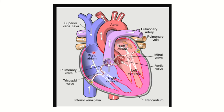Here we can see this is a heart diagram showing the mitral valve on the left side. In the case of the mitral valve, there are only two cusps — one anterior and one posterior. Blood enters from the left atrium to the left ventricle through this mitral valve.